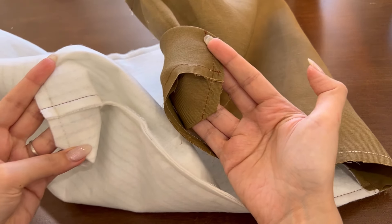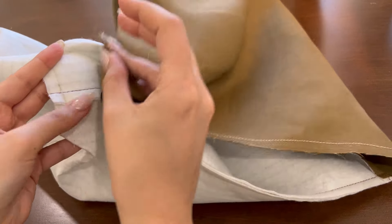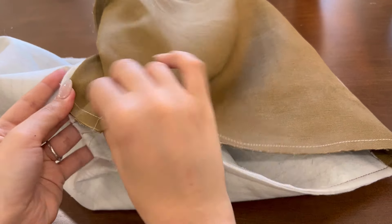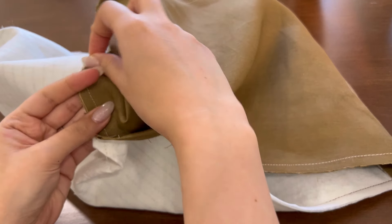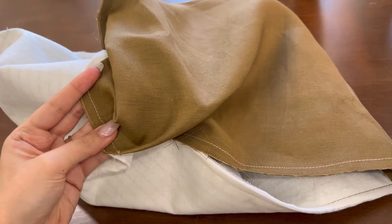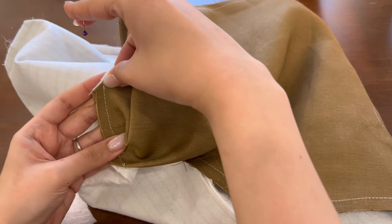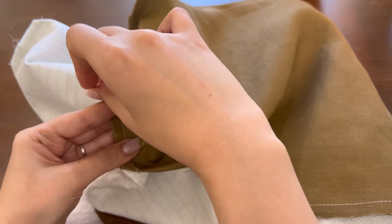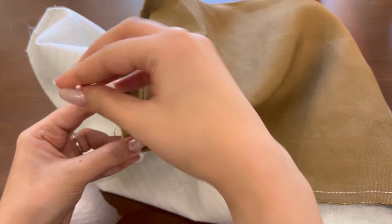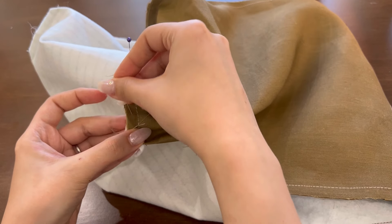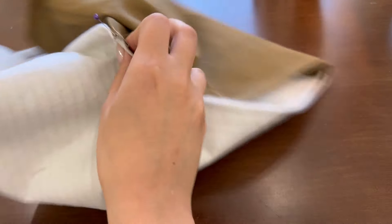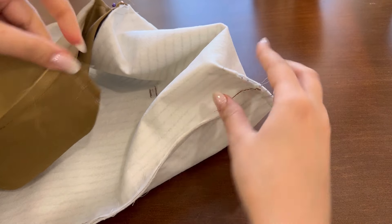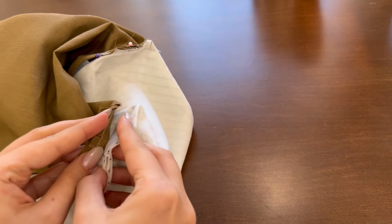This is the tricky part. After you're done sewing place a corner of the lining on the corner on the main fabric. Make sure that the side seams are together and do not twist the piece. Now just carefully pin them together. You should repeat the same for the other corners as well.